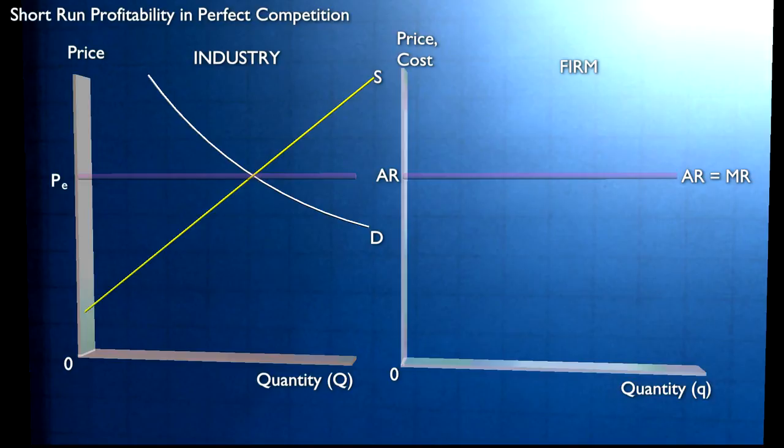Now let's impose our costs on the same diagram. Our marginal and average cost curve, with a marginal cost cutting average cost at its minimum point. And ask the question, what's the profit maximizing level of output?